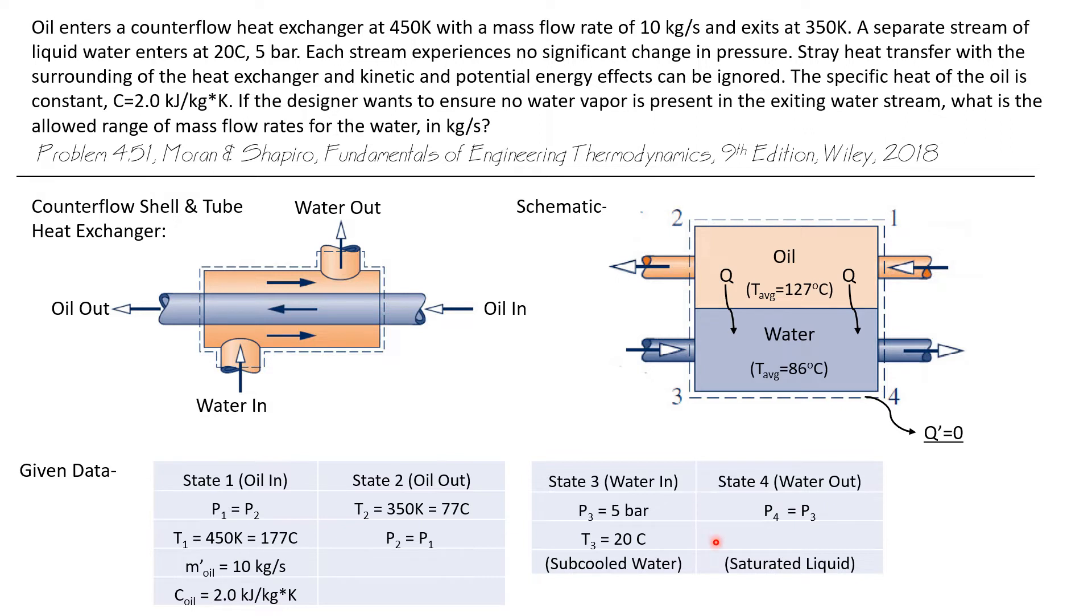Now we are asked to find the flow rate at which there will be no vapor in the water. Notice we're heating the water and if we heat it too much, obviously we can start boiling it and that's when we'll start getting vapor in the water. So what we're going to do is heat it up until it becomes a saturated liquid, and at that point there's no vapor and that's going to define the minimum possible flow rate that we can allow.